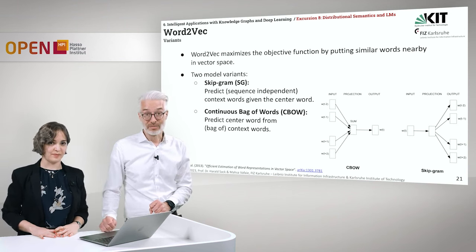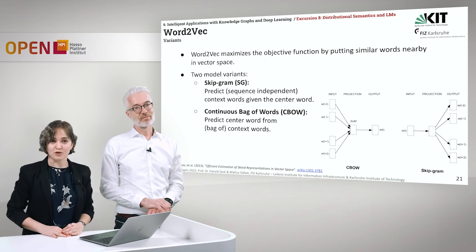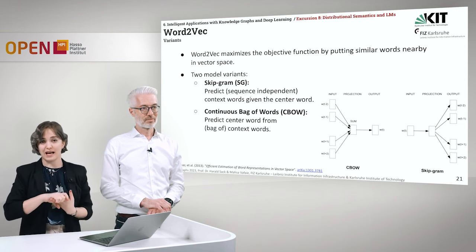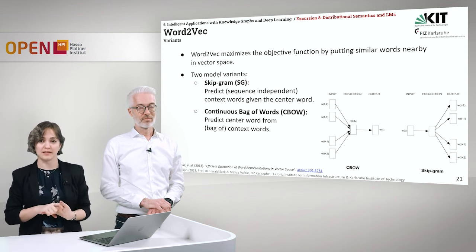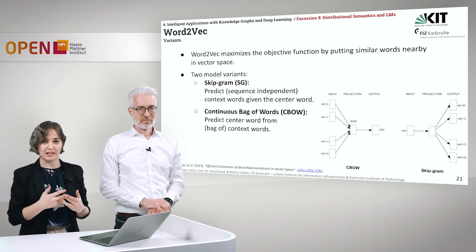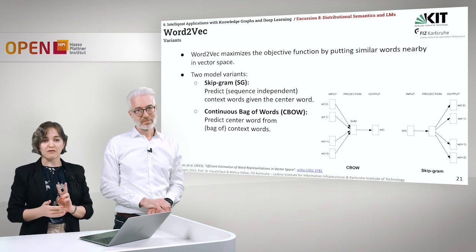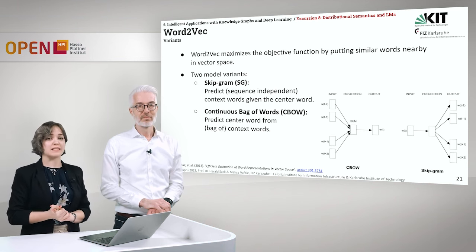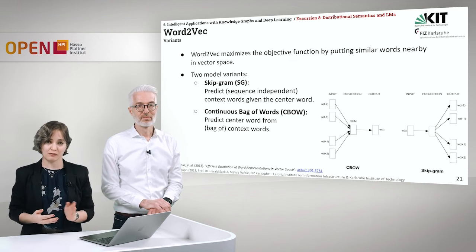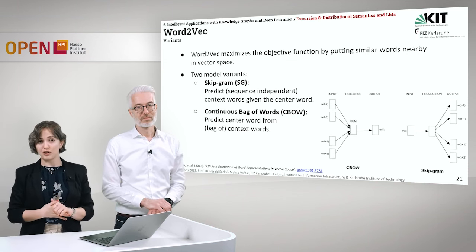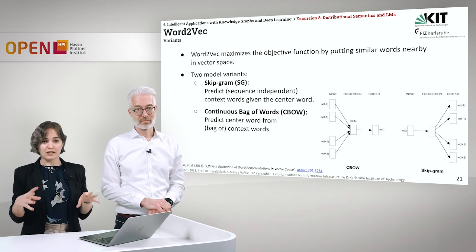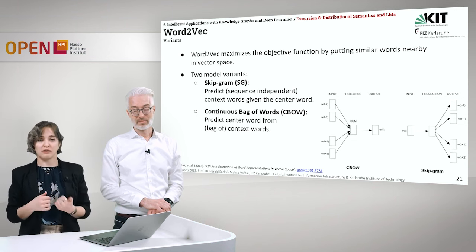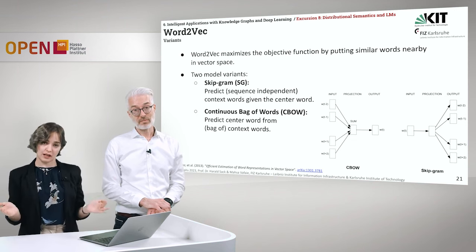Word2Vec tries to maximize the objective function by putting similar words nearby in the vector space, adjusting word vectors and creating the vector space. There are two model variants in the 2013 Word2Vec paper. The first is the Skip-gram model, where the goal is to predict the context words given the center word. The second is the Continuous Bag of Words (CBOW), where the goal is to predict the center word from the context words.